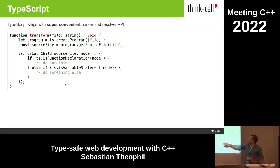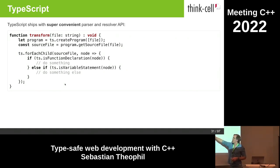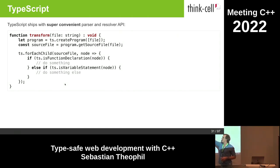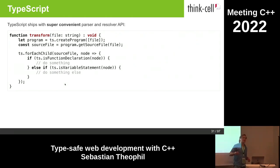TypeScript not only ships with those type definition libraries, but it also ships with a pretty powerful parser API — so we didn't even have to write that. With a short snippet of code we can read one of those interface definitions, iterate over all the syntax nodes in a file, and check: is that a function declaration? Is that a variable statement? If it is a function declaration, what's its name, return type, and arguments?